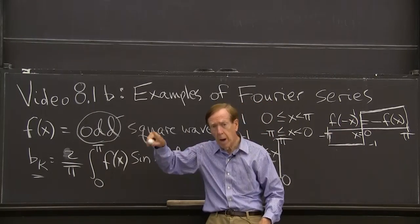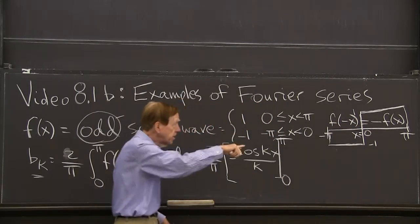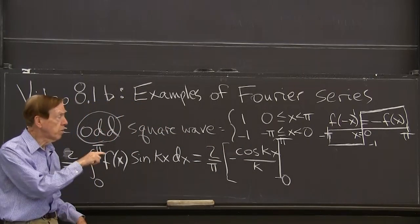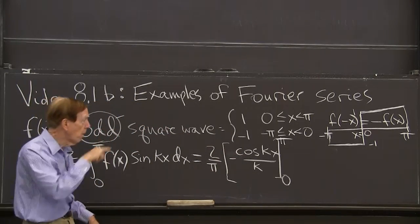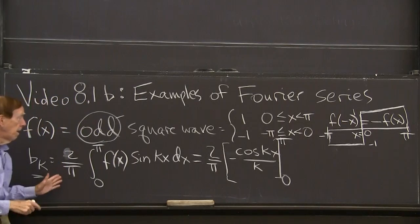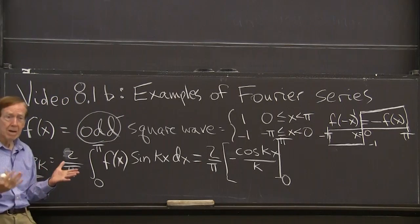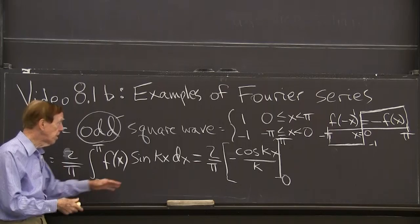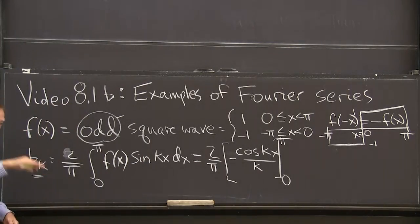which would give a square wave if I continue it on. It will go down, up, down, up in a square wave pattern. And I'm going to express that as a combination of sine functions, smooth waves.